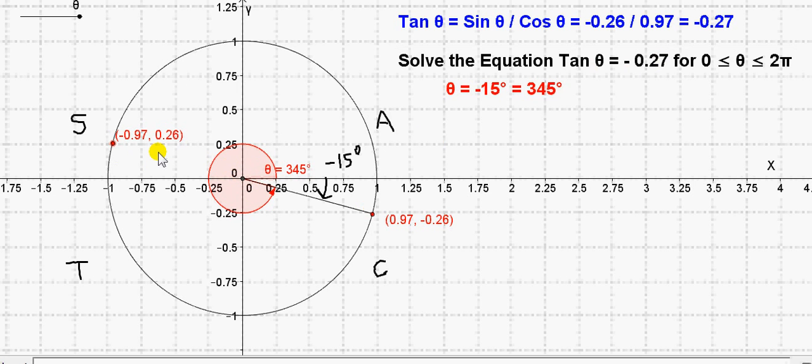So here it is. You can see that the coordinates just change sign. Plus 0.97 becomes minus 0.97. Minus 0.26 becomes plus 0.26.